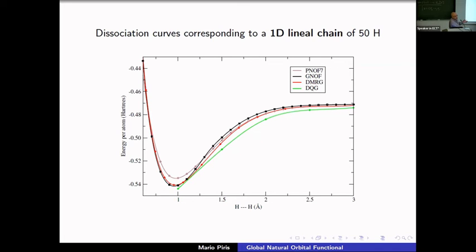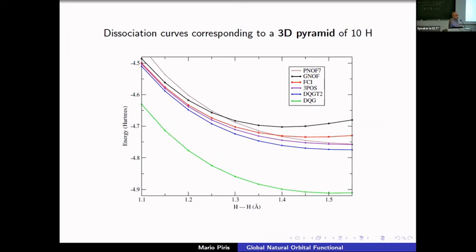We increased the chain to 50 atoms and the accuracy does not deteriorate with system size. The variational 2-RDM method with only two-particle conditions gives energies well below full CI. For the 3D pyramid system, PNOF7 descends too steeply, and even imposing three-particle N-representability conditions in the variational 2-RDM method causes the energy to go below full CI beyond about 1.5 Å, predicting equilibrium at around 1.41 Å compared to the correct 1.46 Å.